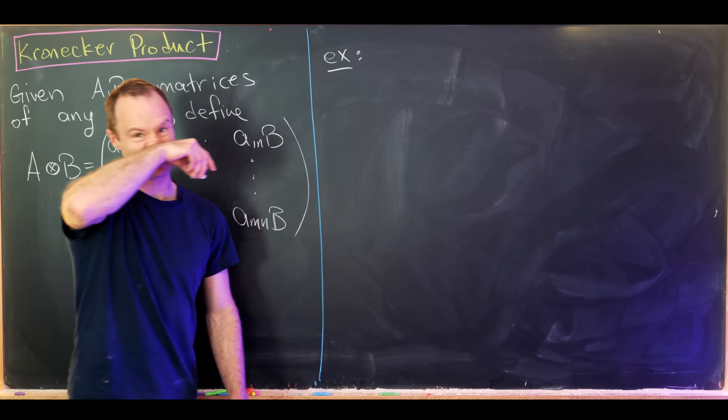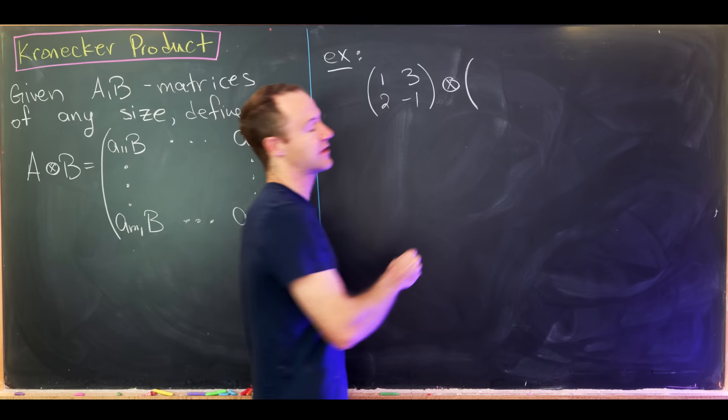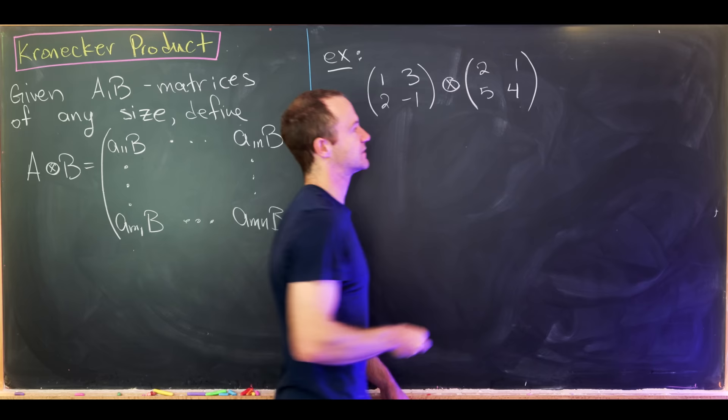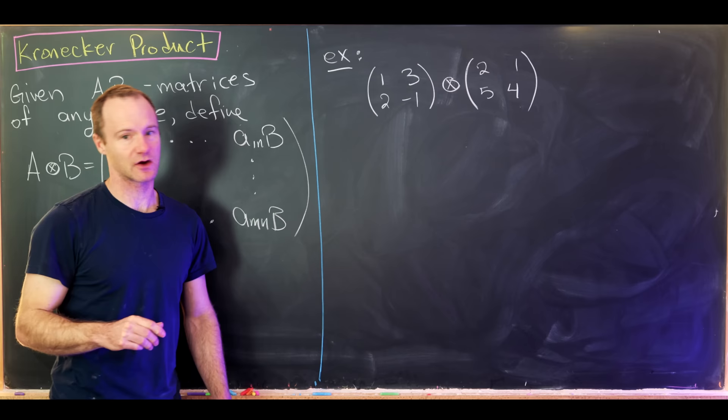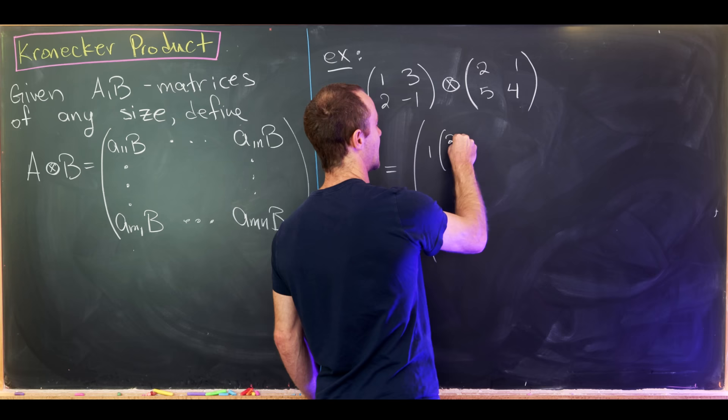Let's take the matrix [[1, 3], [2, -1]] and compute its Kronecker product with [[2, 1], [5, 4]]. I'll stay with two by two matrices because that keeps the calculation fairly nice. This is going to end up being a four by four matrix, and the upper-left block will be 1 times the matrix [[2, 1], [5, 4]].